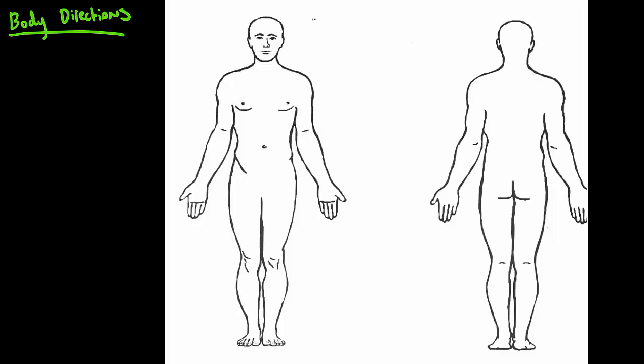So anatomical position is shown here with this man standing with the palms facing forward and outstretched like that. And this is the only position in which you base your directions off of. So if he's in any other direction, if he has his hand above his head or his leg outstretched or bent, you'd always refer back to anatomical position, which is this, before you base any directionalities.